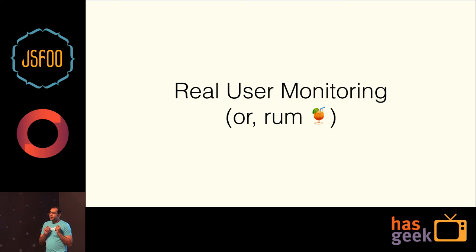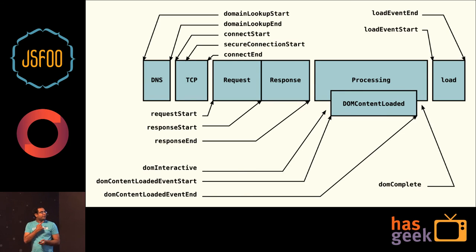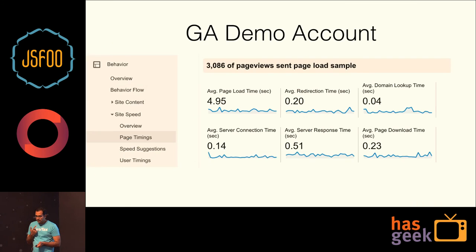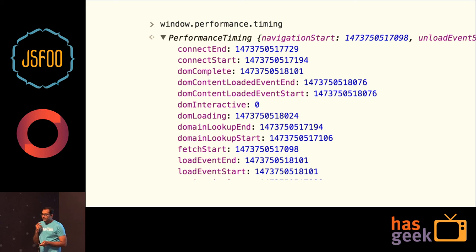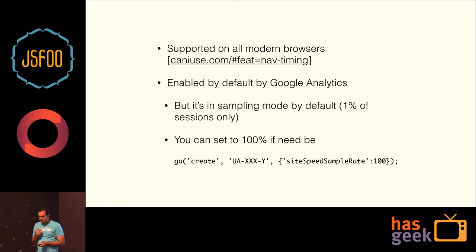Finally, we come to the real user monitoring section. Everyone talks about real user monitoring — it's basically taking the timing performance measurements from the browser and sending them to an analytics software or your server for collecting and analyzing later. The diagram we saw earlier is basically a browser API — you do performance.timing and you get all the timestamps. These are UTC timestamps and you can look at the difference between them to figure out load time and so on. Every page load will have this data available, and it is available on almost all modern browsers — I think mobile Safari recently dropped support for it, but otherwise almost all browsers have it.